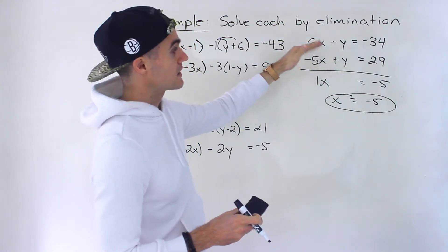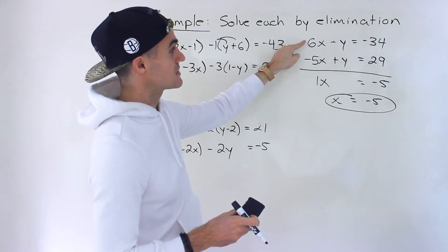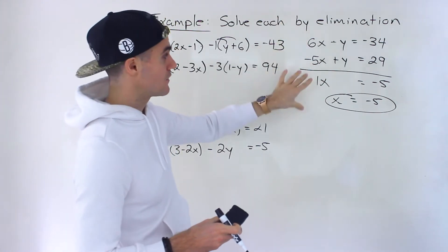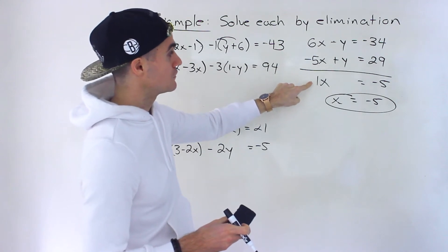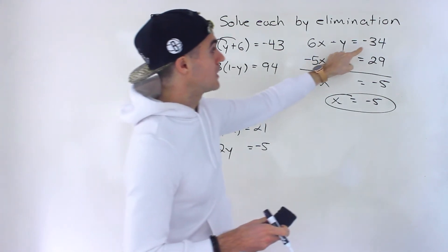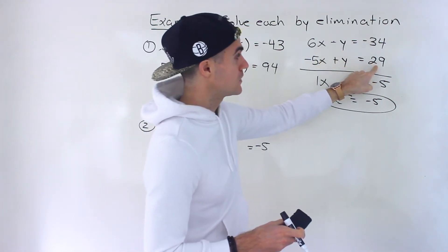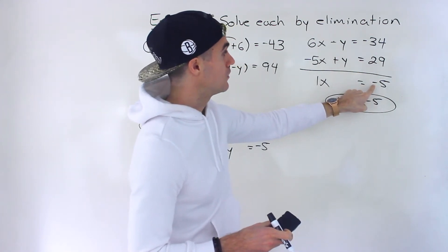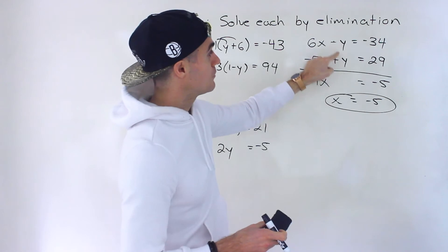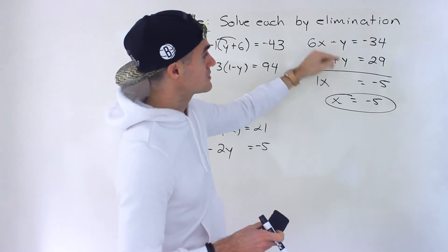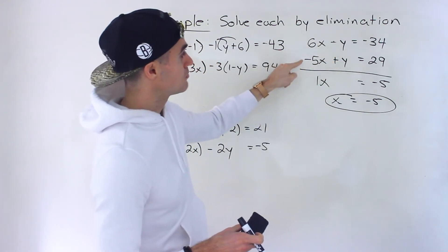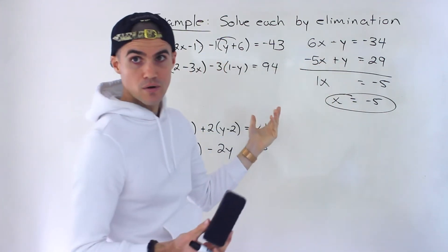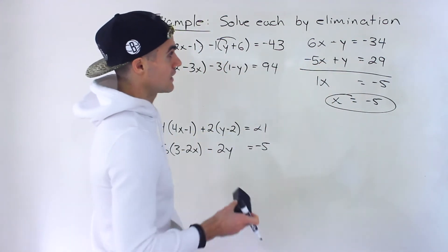There are multiple ways to go about this — just whichever way you're doing it, make sure you're getting that x value of negative 5. Now if these were the same sign — like this was positive y, this was positive y — then we'd be subtracting these. So we'd have 6x minus negative 5x, which would be 6x plus 5x, giving us 11x. Then we'd have negative 34 minus 29, which would give us negative 63. But they're not the same — they're opposite signs, so we just have to add these. The x is already isolated: it's negative 5.